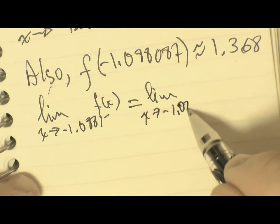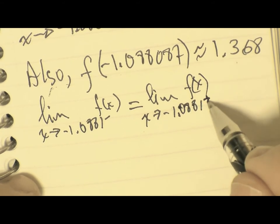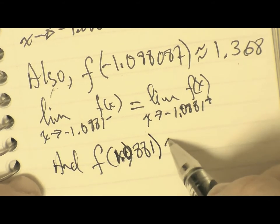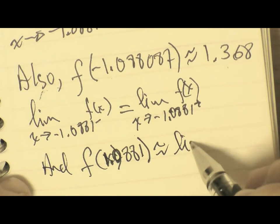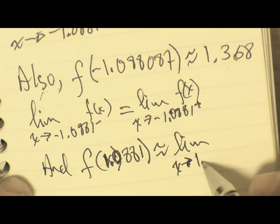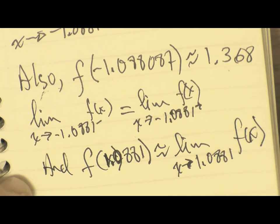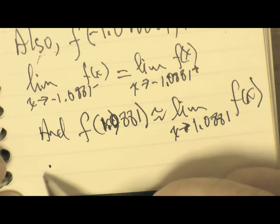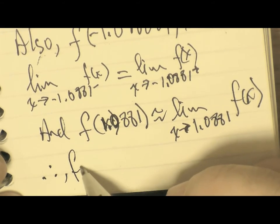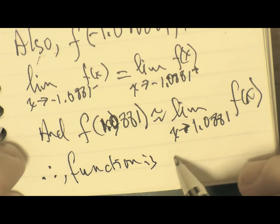So written, we say that f of negative 1.088087 is about 1.368, and we say that the left and right limits are equal, so that also helps us to conclude the limit exists. And finally, to show the third condition for Cauchy, we need to say that f of negative 1.088087 equals our limit at that x value, and therefore conclude that the function is continuous at that point.